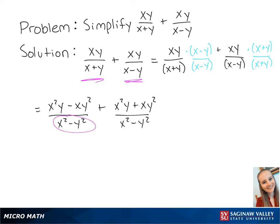Now we have a common denominator, so we can combine the two fractions. This will give us x squared y minus xy squared plus x squared y plus xy squared all over x squared minus y squared.